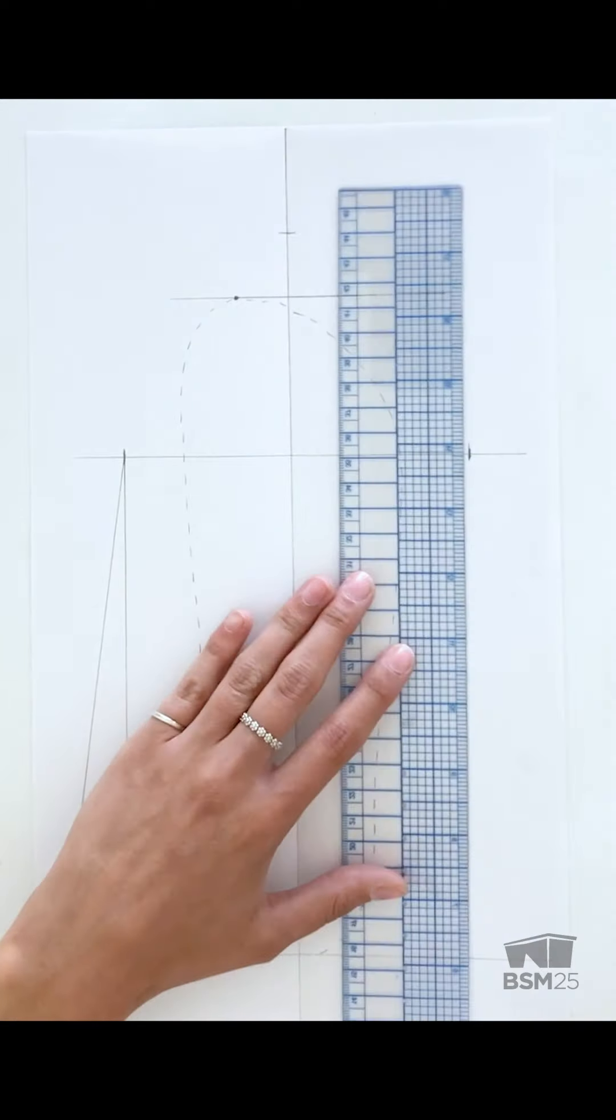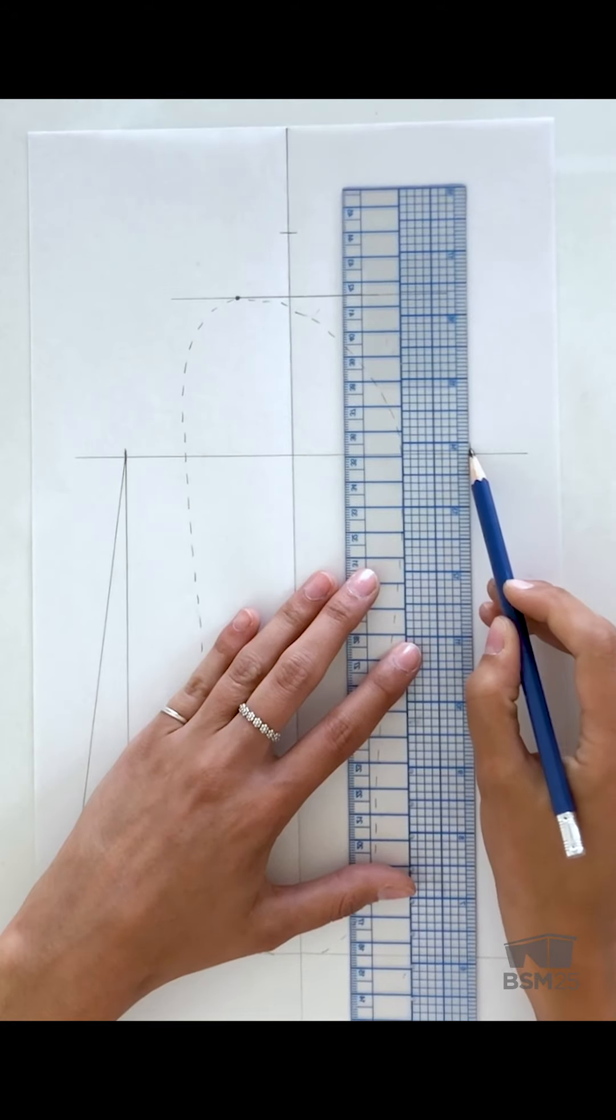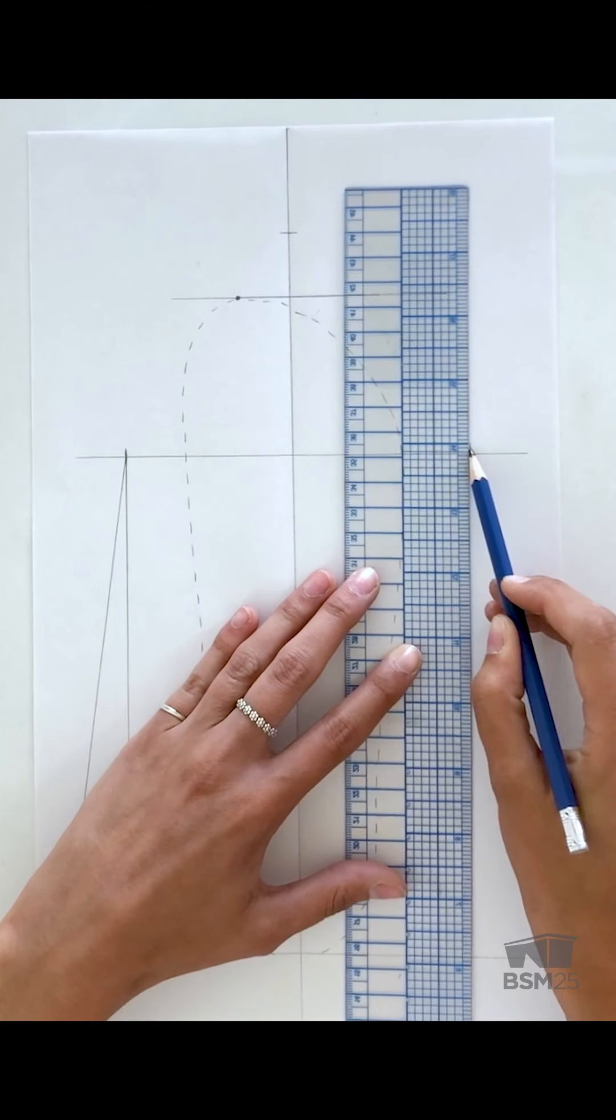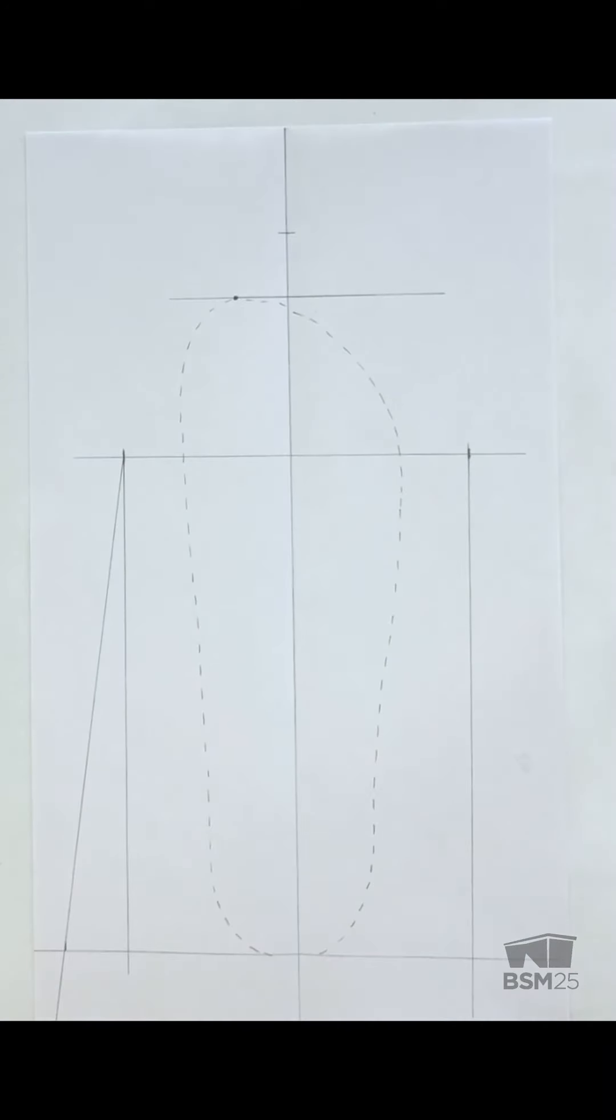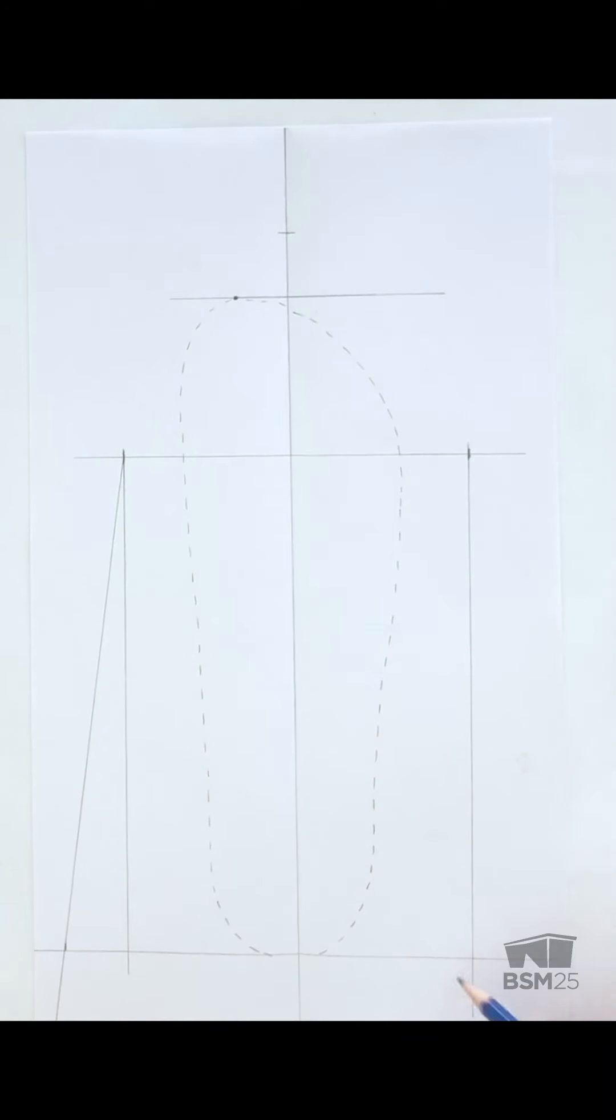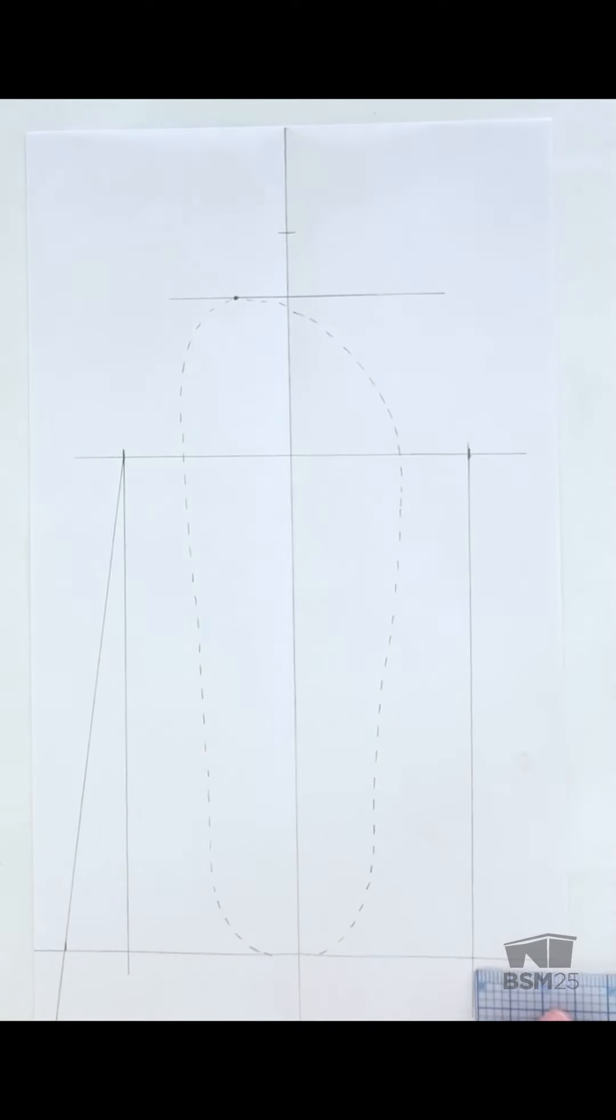Next, taking your ruler, draw a vertical line from this tick mark here all the way to the bottom of the page. Where the lines intersect, we're going to measure out 1 inch.